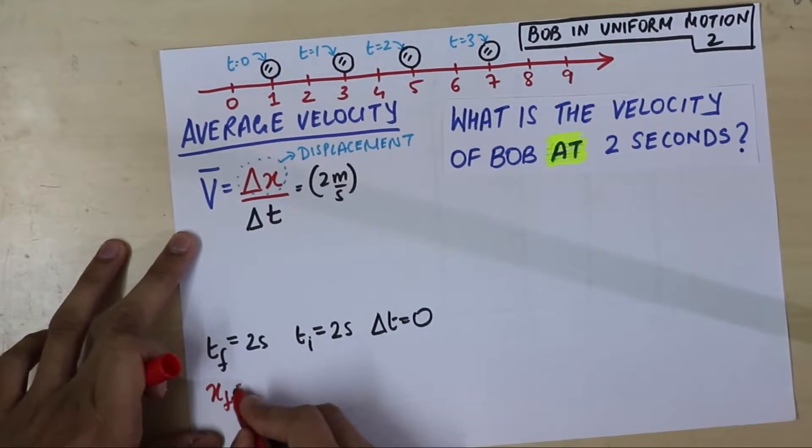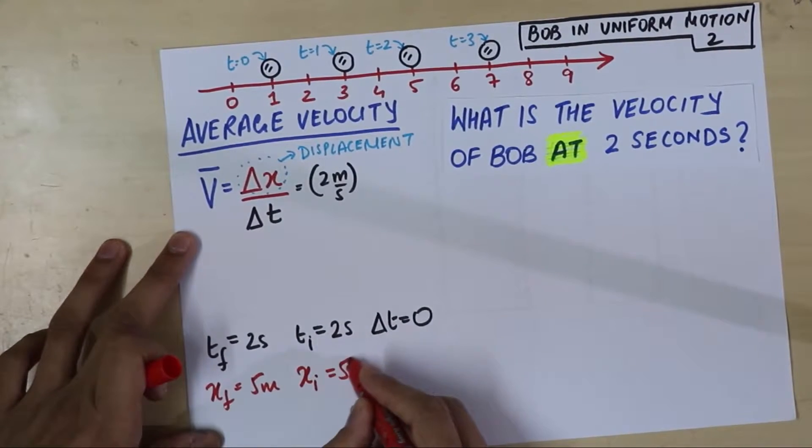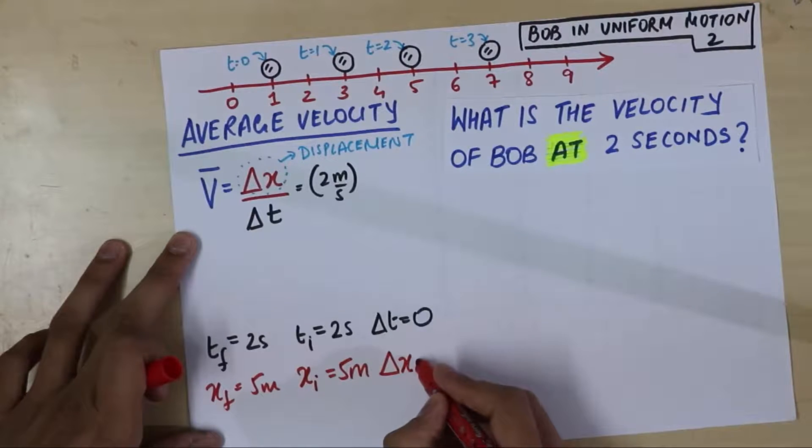So, the final position is 5 meters. The initial position is also 5 meters. So, delta x is 0.